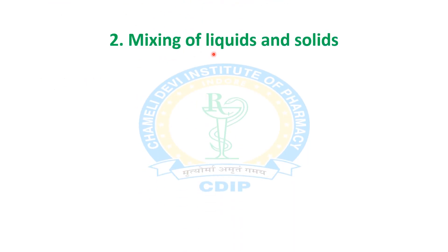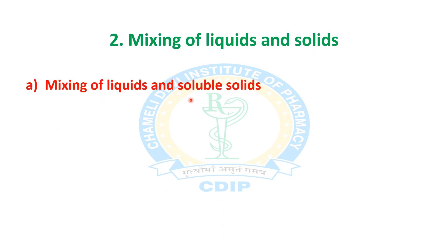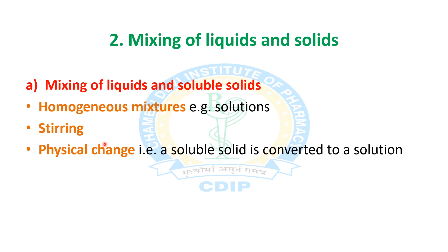The second type of mixing is mixing of liquids and solids. First is mixing of liquids with soluble solids, which also gives homogeneous mixtures. By simple stirring, liquid and soluble solids can be mixed together. This is called a physical change — when a soluble solid is converted to a solution, it is a physical change, giving a homogeneous mixture.